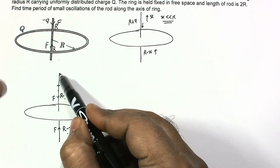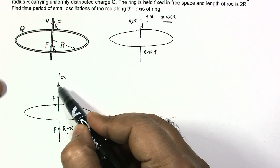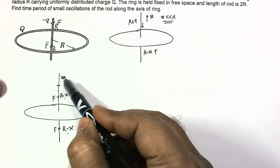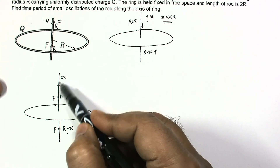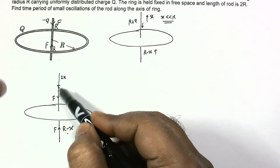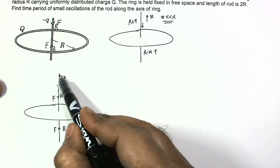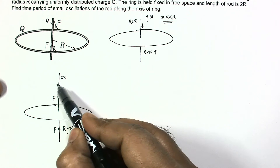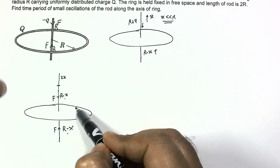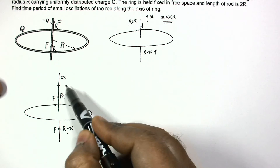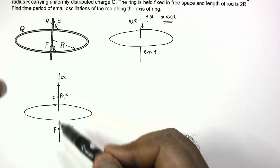The extra length 2x is very small compared to the ring radius, so we can assume that the electric field over this 2x length is approximately uniform, making it easier to calculate the force.